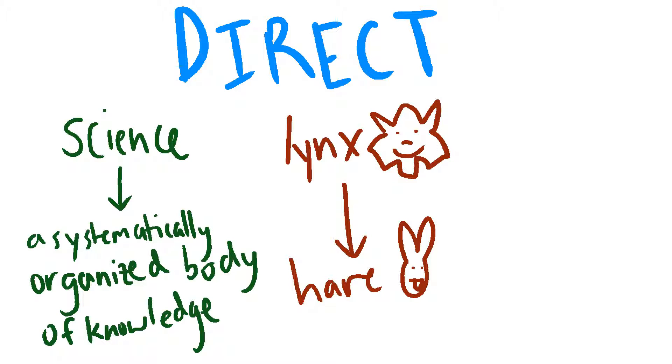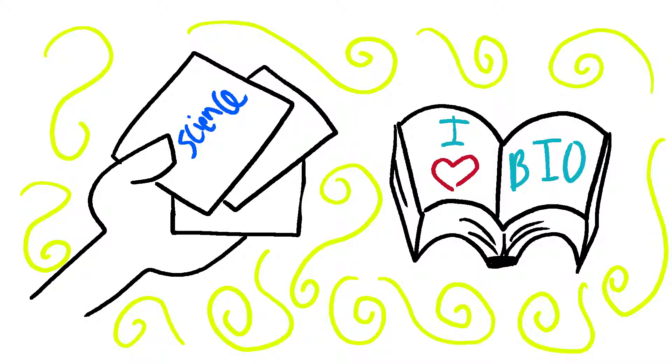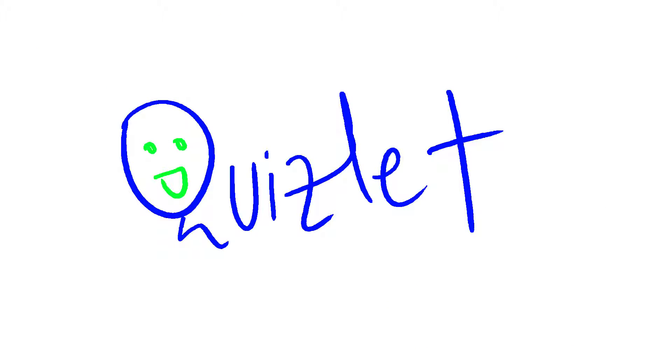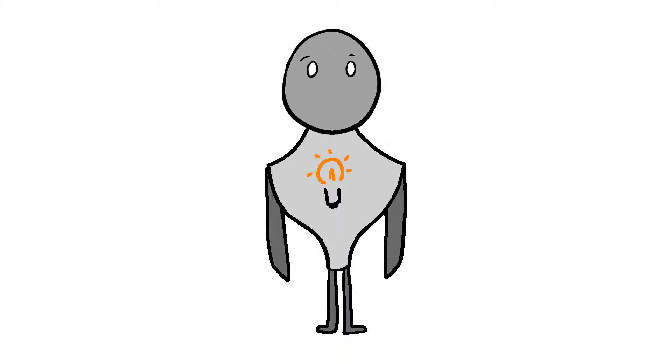First, direct connections. These are the word-to-definition, predator-prey, problem-to-answer relationships that we memorize straight from our textbooks. These can be strengthened by repeatedly going through flashcards or reading about the same thing multiple times. Quizlet is my go-to for making direct connections. Of course, these are the most basic connections you need to have, but they're not always enough.